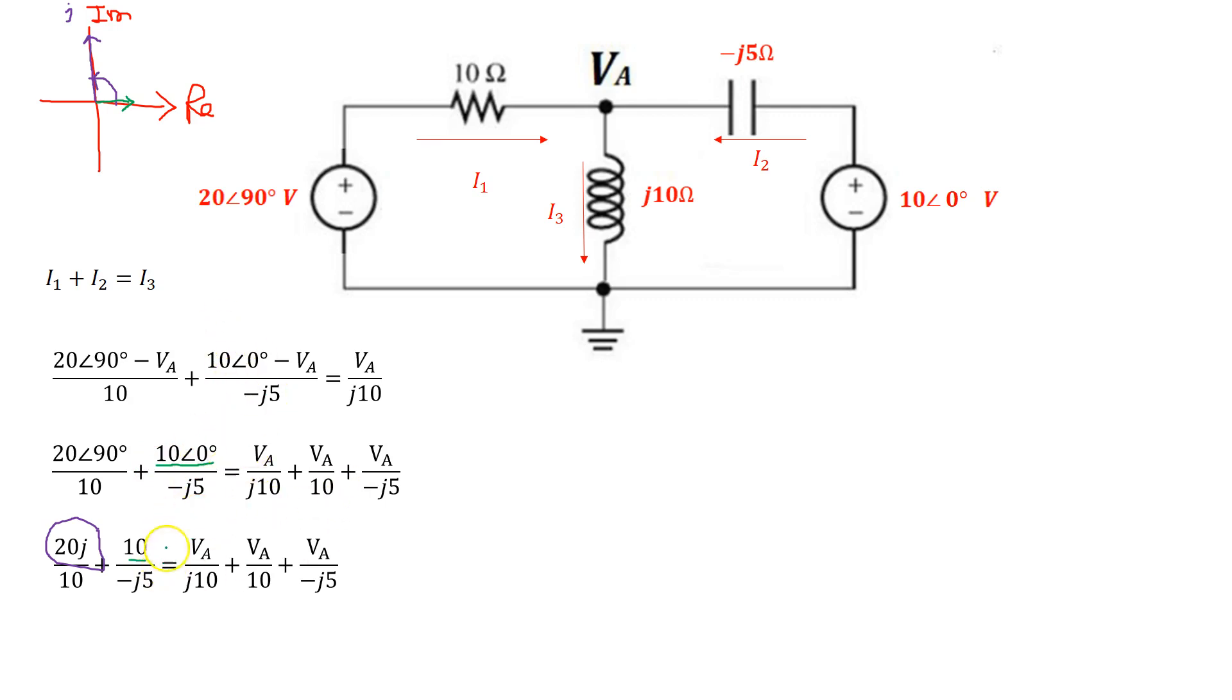So that's the algebraic simplification I'm doing. Now I'm going to do 20 divided by 10 gives me 2j. 10 divided by 5 gives me 2. So I can write that as 2j minus 2 over j equals, I collect the VA term and take it out.